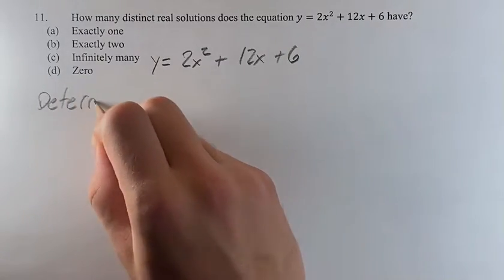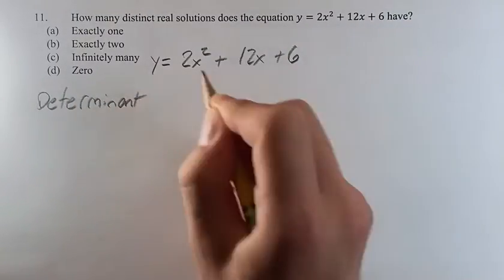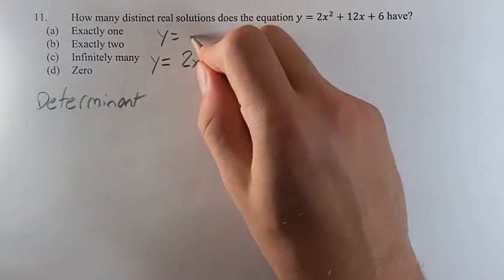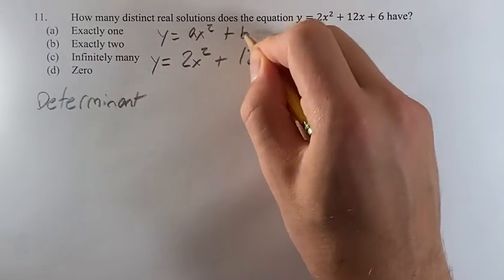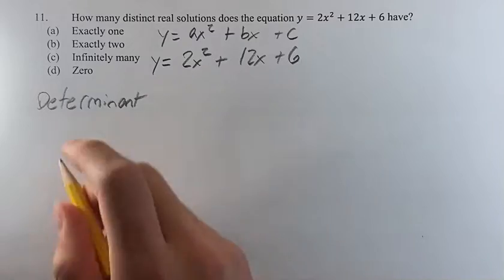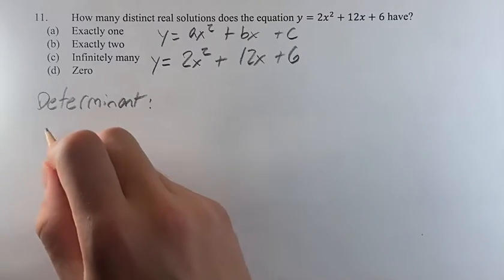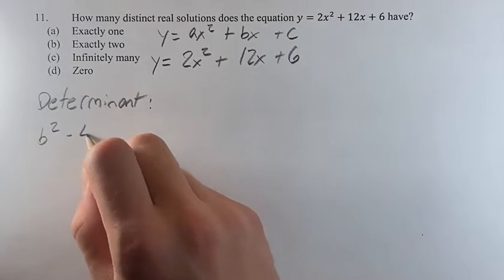You can think of the determinant as what's under the square root when you do the quadratic formula. For y equals ax squared plus bx plus c, the determinant is b squared minus 4ac.